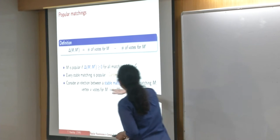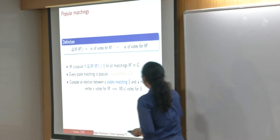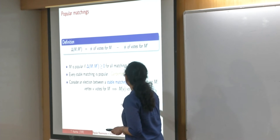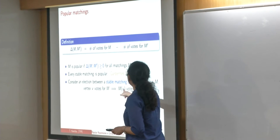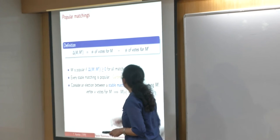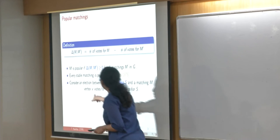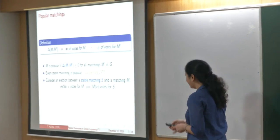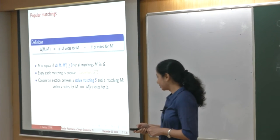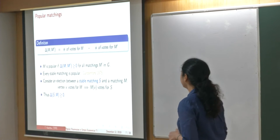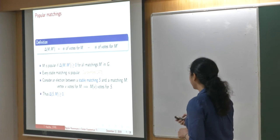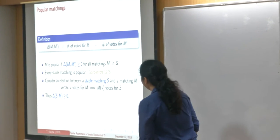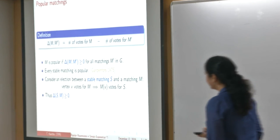When we have an election between a stable matching S and a rival matching, if a vertex V votes for the rival matching, its partner M(V) in the rival matching has to vote for S. Otherwise, the edge between V and M(V) would block S, and S being a stable matching has no blocking edge. So a stable matching never loses a head-to-head election against any matching — for sure, a stable matching is popular.